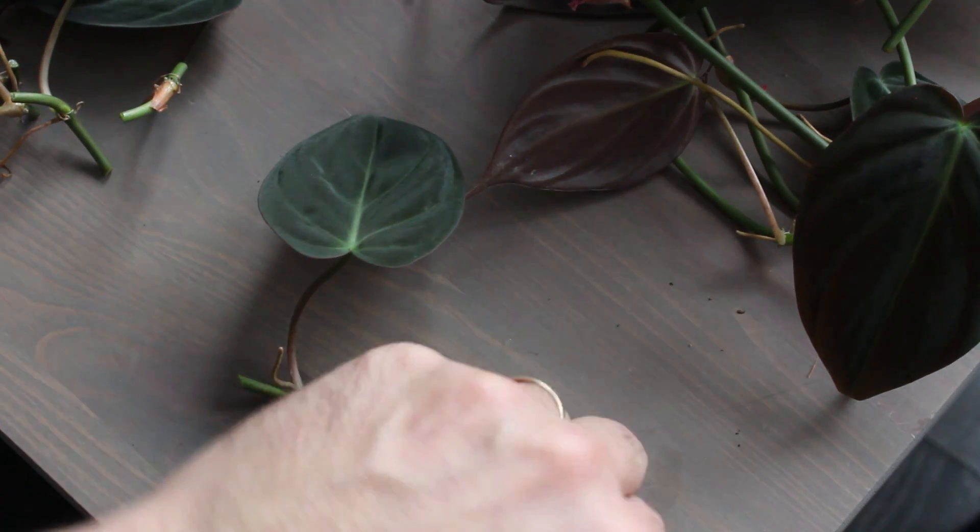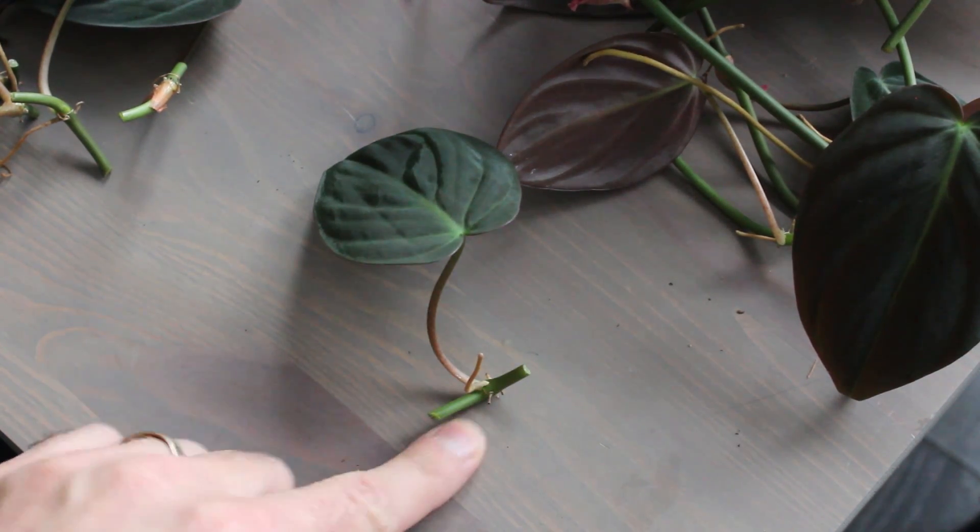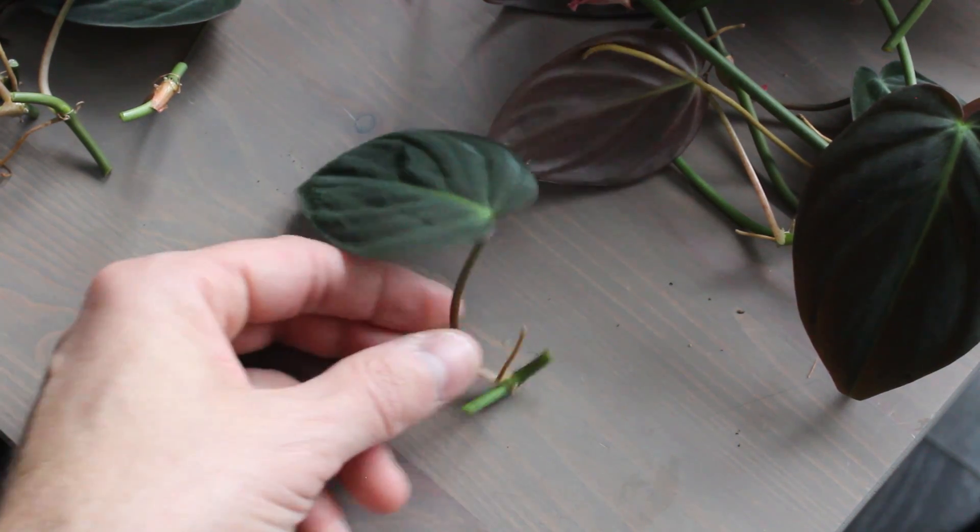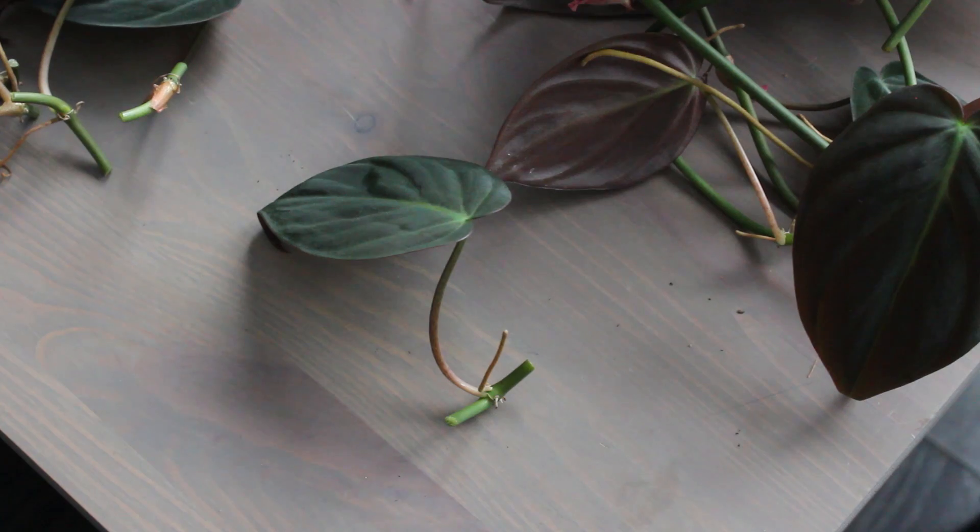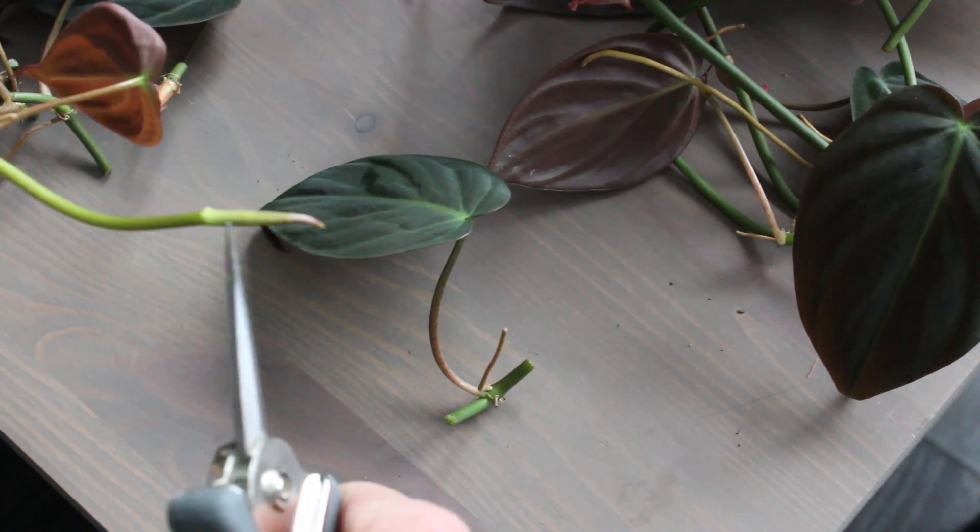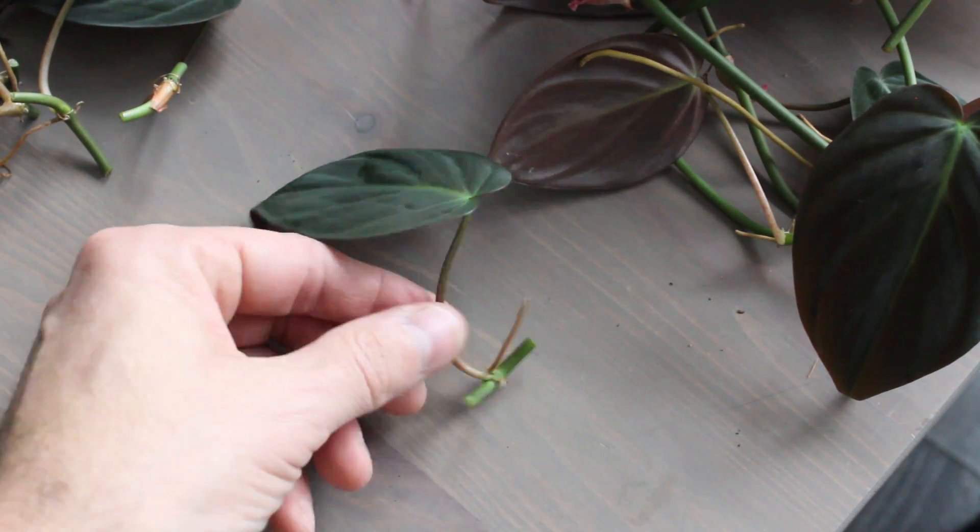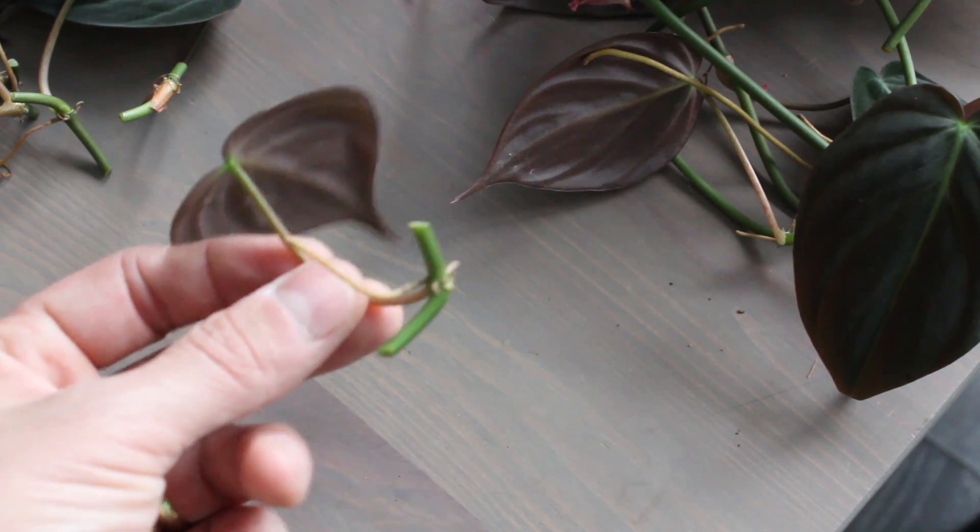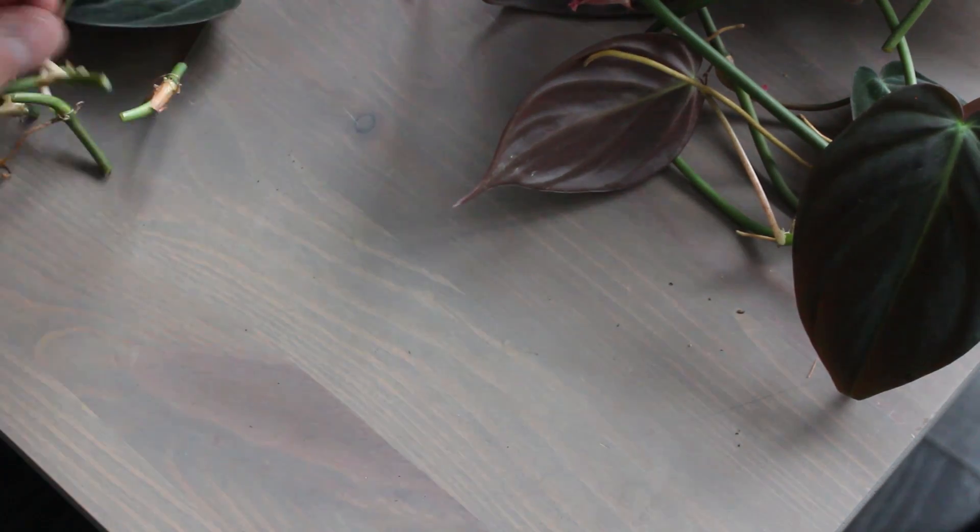The nice thing about doing this method by single leaf is it eventually will start its own new strand of vines and leaves. So if you want numerous new plants, this is the method to do. If you do strictly just a strand cutting, you will only continue to get growth from this area here, whereas this one it will start a whole new plant. So if you have five or six single leaf cuttings, you will get five or six new strands if you plant them all in the pot together.